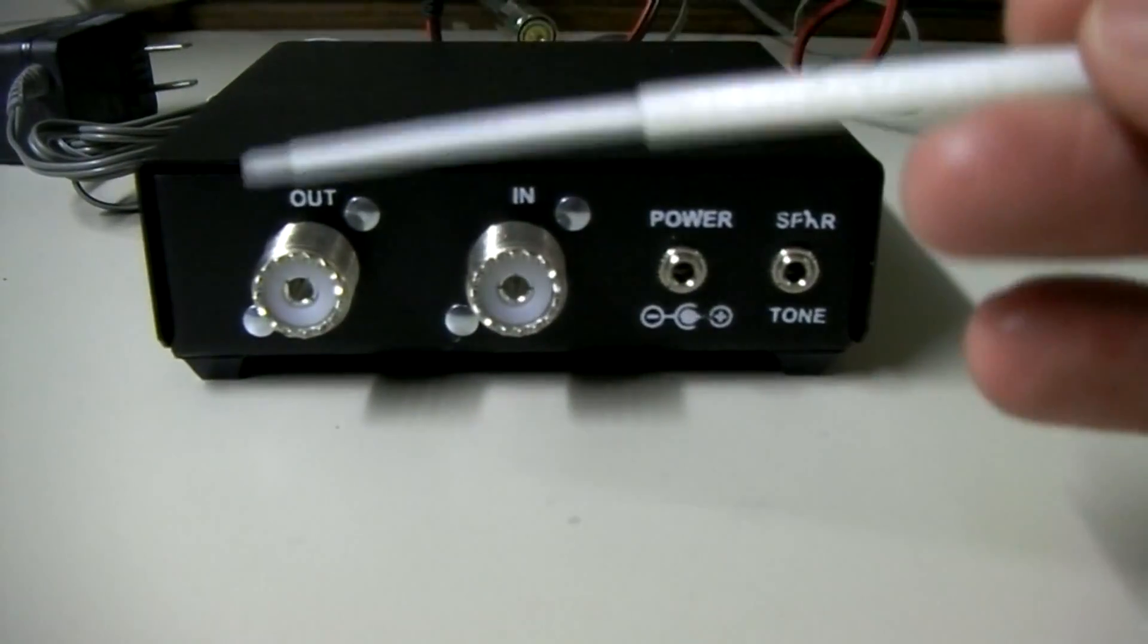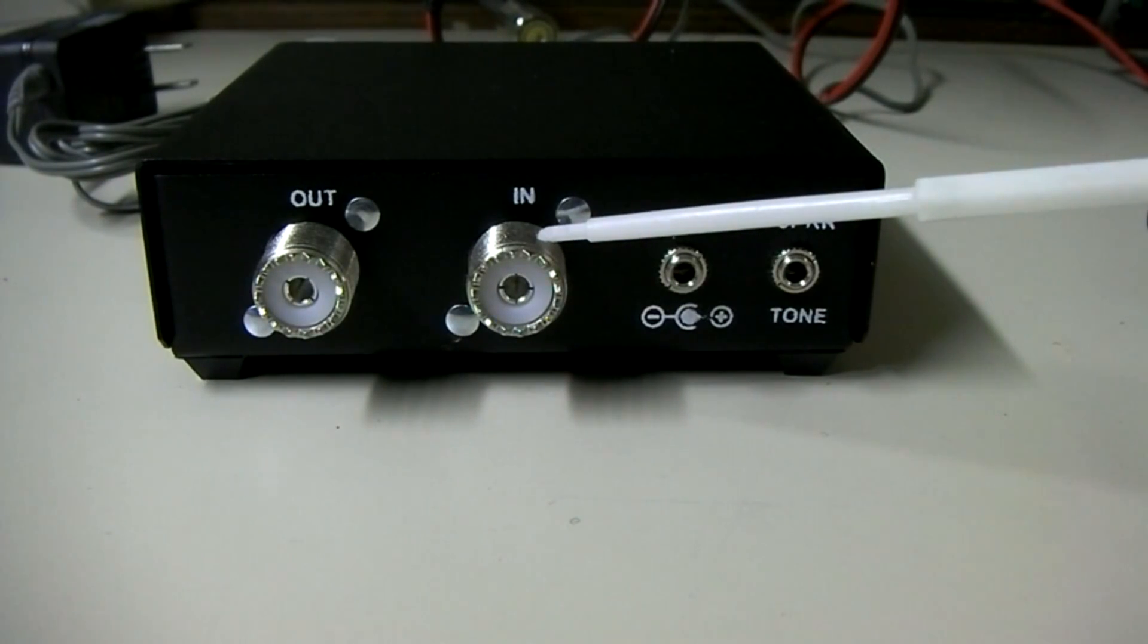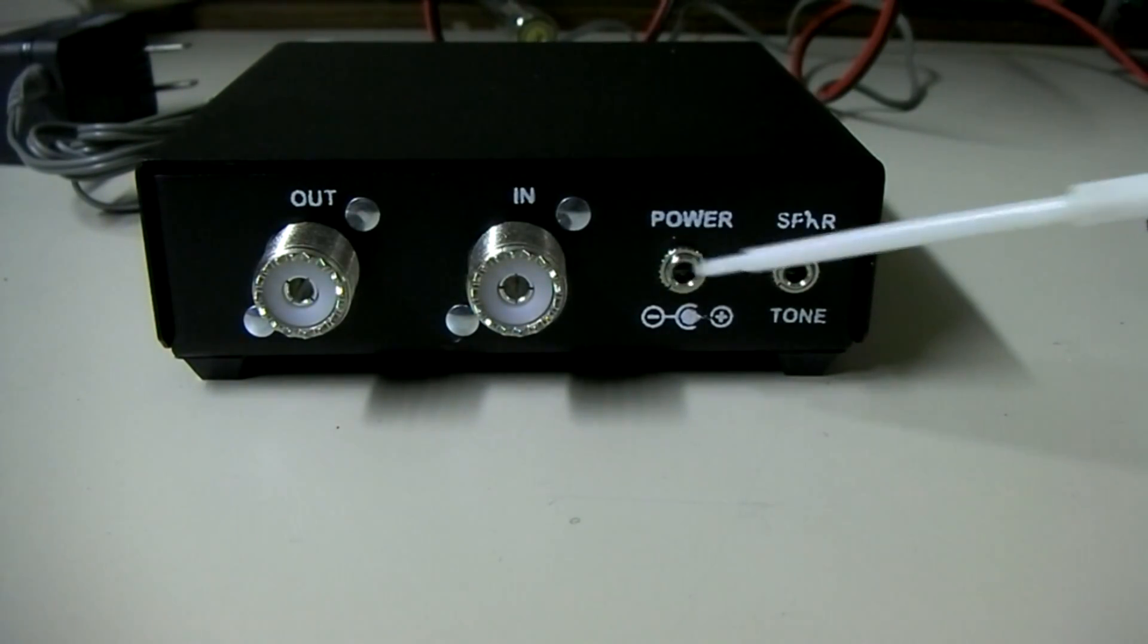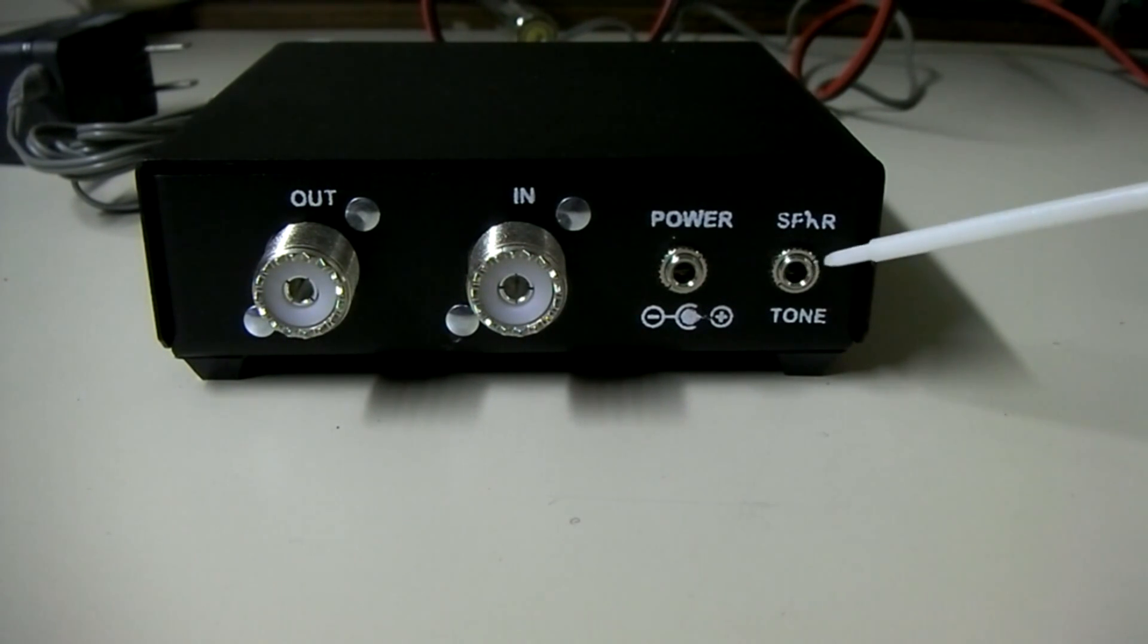Around the back, very simple. You plug your coax in from the radio. This goes out to your antenna. Power plugs in here, and your speaker tone plugs in here. Now this is what's going to be different about this frequency counter from previous ones I might have reviewed.